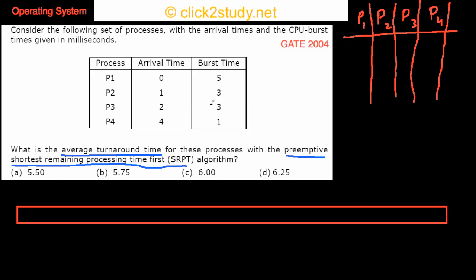So what I'm going to do first out here is I'm going to write down these burst times down here for these processes. For P1 it is 5, I'm going to write these because these will change. For P2 it is 3 in the beginning, for P3 it is 3, and for P4 it is 1. And you have to remember it is shortest remaining time.